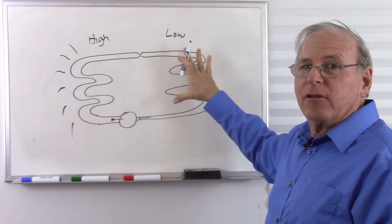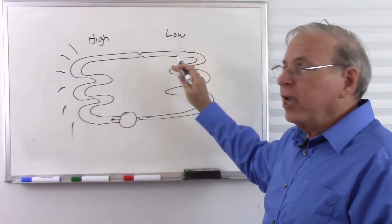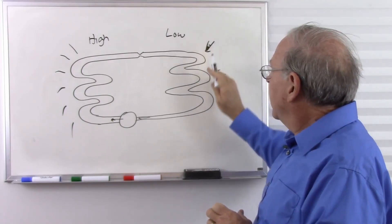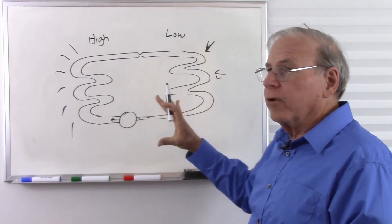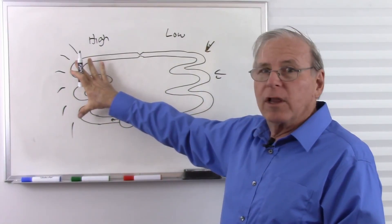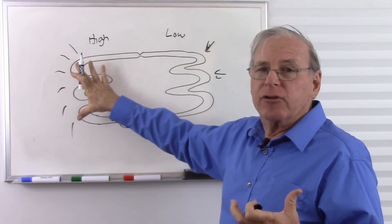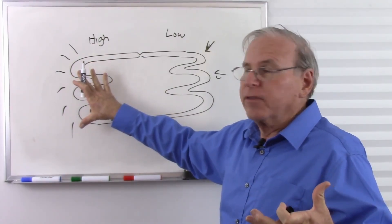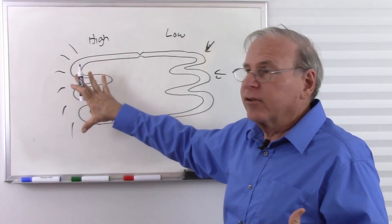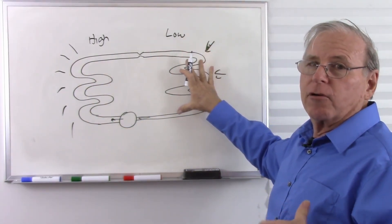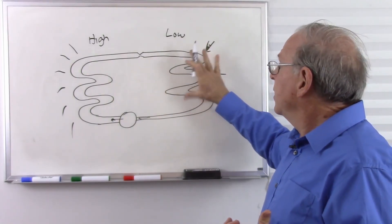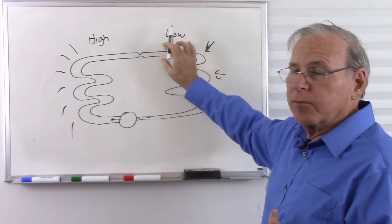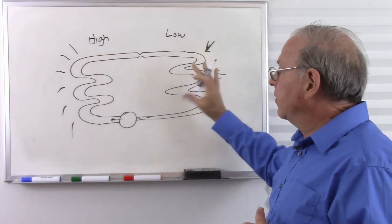When the refrigerant expands back to the original pressure, it's lost energy so it gets cold, and it absorbs heat on the other side. We blow a fan across that to extract the cold. A refrigerator has one coil on the outside — it may or may not have a fan; an air conditioner does, but a refrigerator may just use convection to get rid of the heat. We get rid of that heat, then expand the refrigerant, and on the inside of the refrigerator or the cold side of the air conditioner, we blow a fan across it — and we get hot on one side and cold on the other.